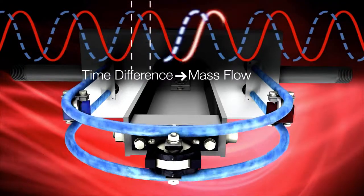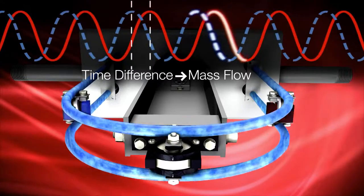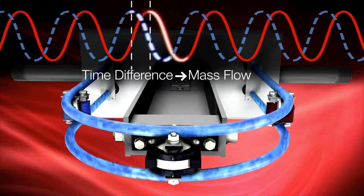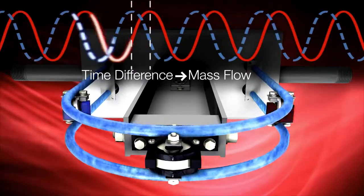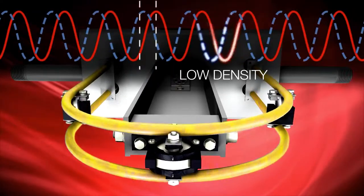The time delay between the two sine waves is directly proportional to mass flow rate. The frequency of the sine waves is also used to measure fluid density. The higher the frequency, the lower the fluid density. The lower the frequency, the higher the density.